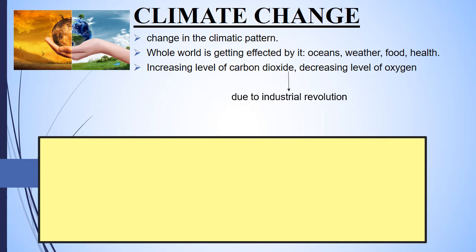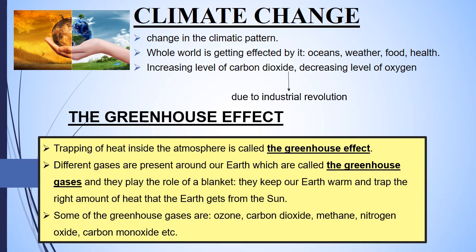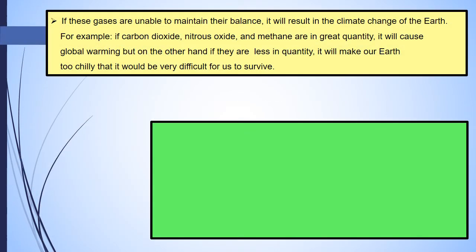To understand why the climate is changing on a large scale, we have to understand a phenomenon called the greenhouse effect. Trapping of heat inside the atmosphere is called the greenhouse effect. Different gases are present around our earth called greenhouse gases, and they act just like a blanket. They have two roles: first, they keep the earth warm, and second, they trap the right amount of heat that the earth gets from the sun. Some of the greenhouse gases are ozone, carbon dioxide, methane, nitrogen oxide, and carbon monoxide.